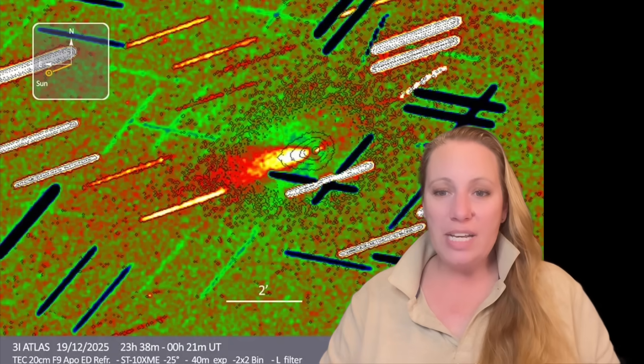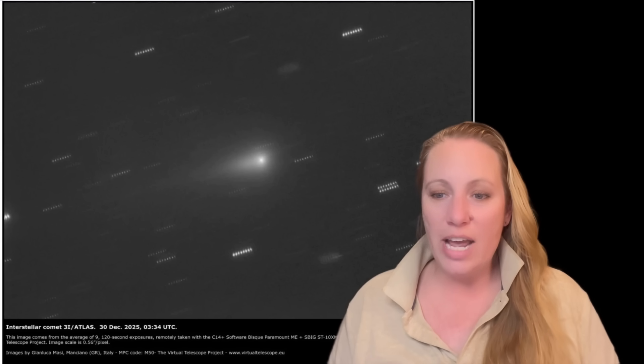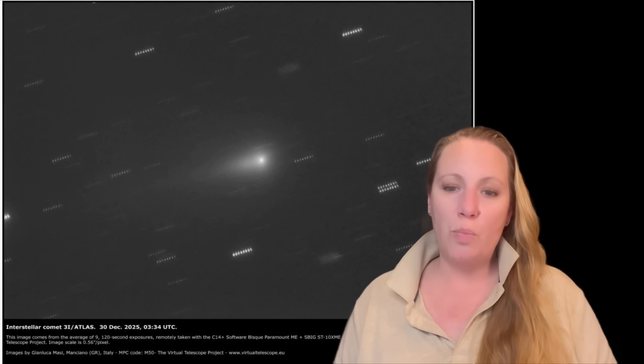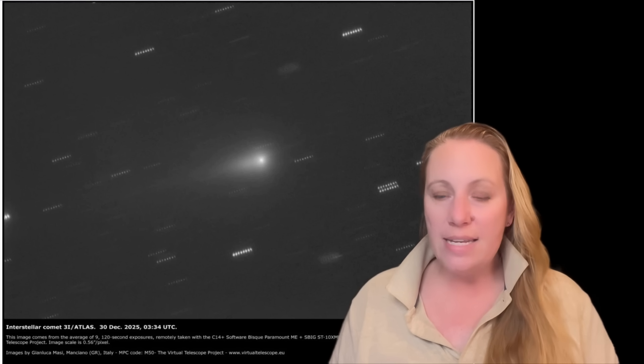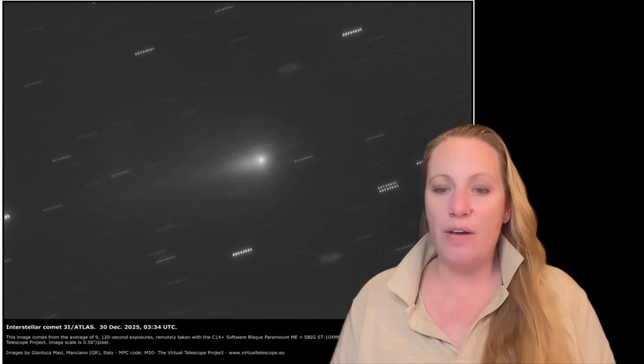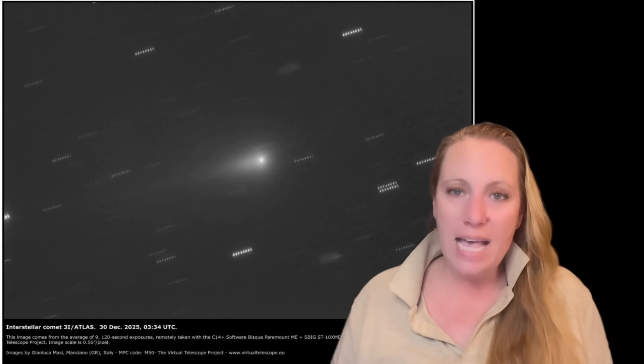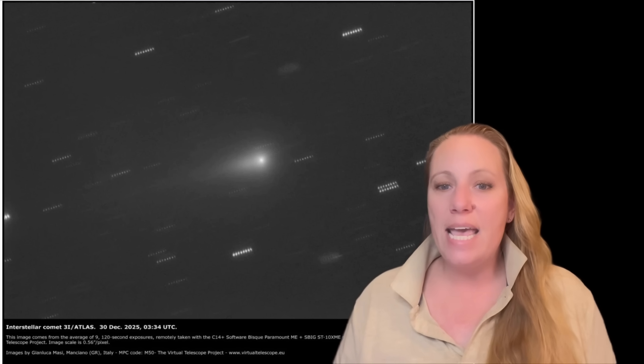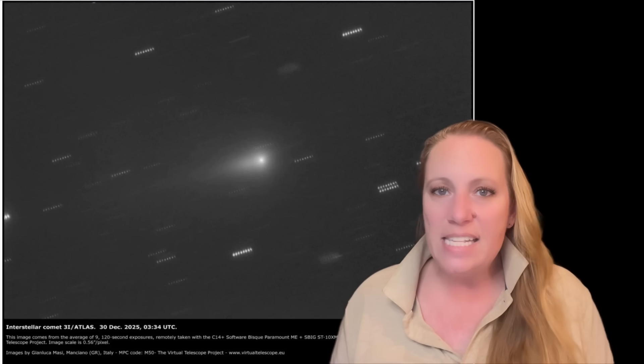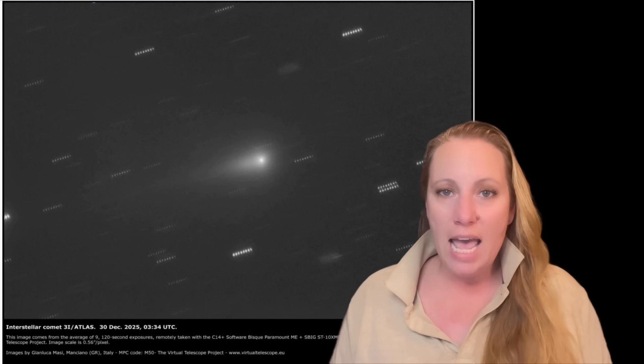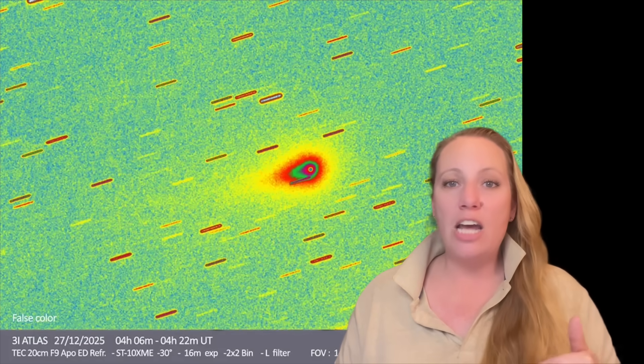The recent image that we have from December 30th shows interstellar object 3i Atlas, taken with the Virtual Telescope Project facility in Manciano, Italy. And we see the prominent anti-tail jet clearly observed in the direction of the sun, towards the lower left in the image. What Avi Loeb is saying is that 3i Atlas right now has shown us a number, almost like 16, 17 of unexplained anomalies